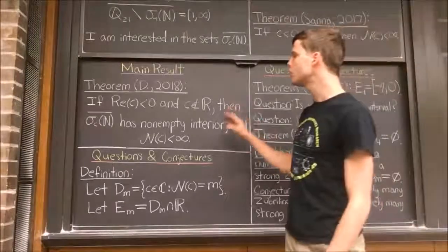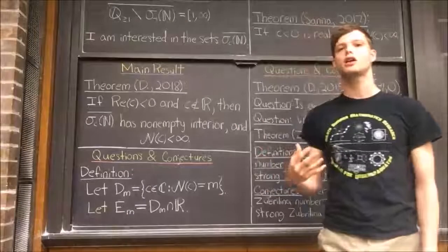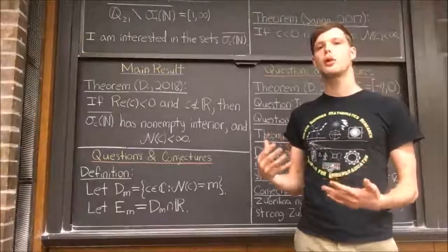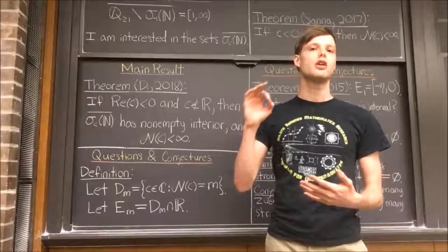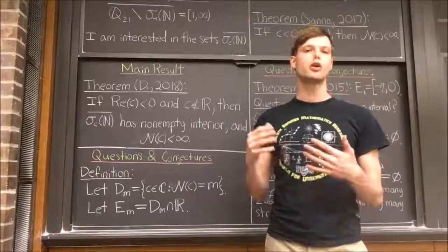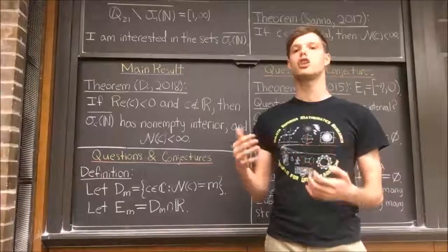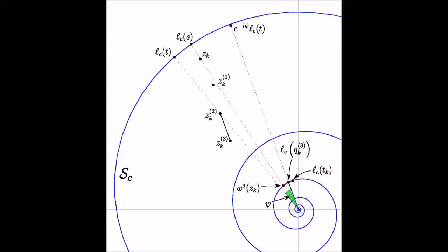The main difficulty in proving this theorem arises in trying to show that the closure of the range of σ_c contains a disk of positive radius centered at the point 1. In order to prove that, we analyze the geometry of certain logarithmic spirals. These spirals arise naturally in the study of these divisor functions because for any fixed c, the points σ_c(p) for prime numbers p all lie on a spiral.